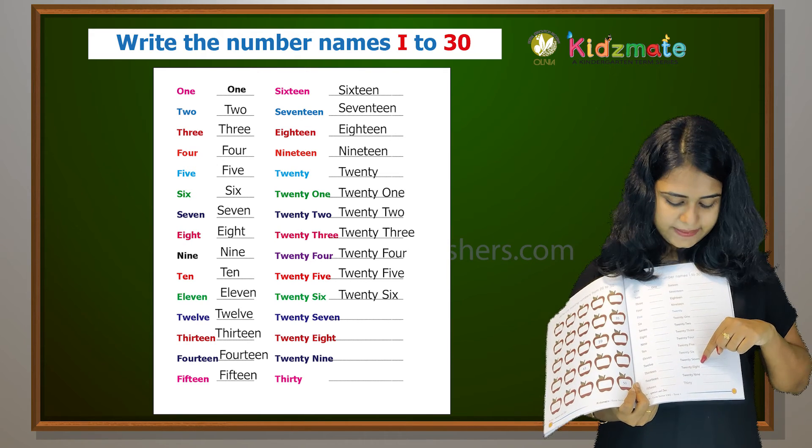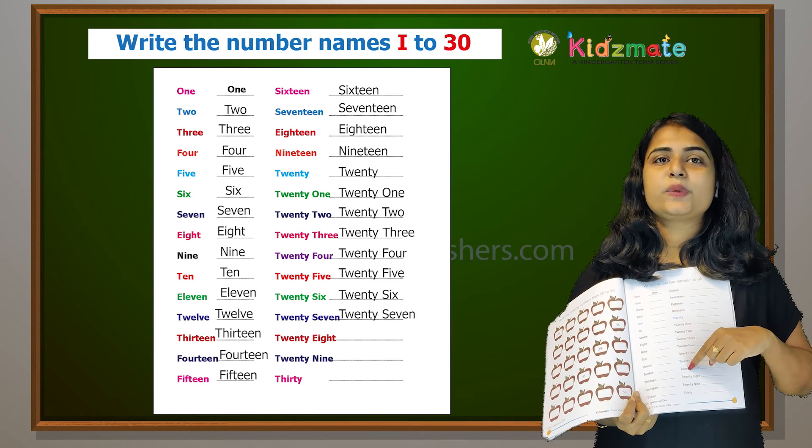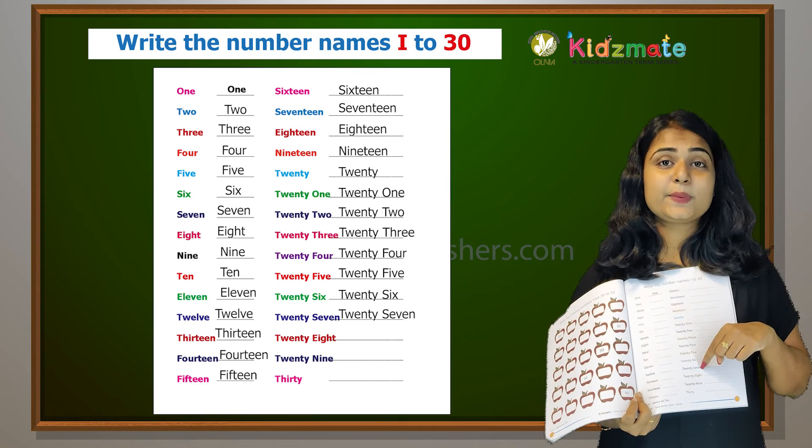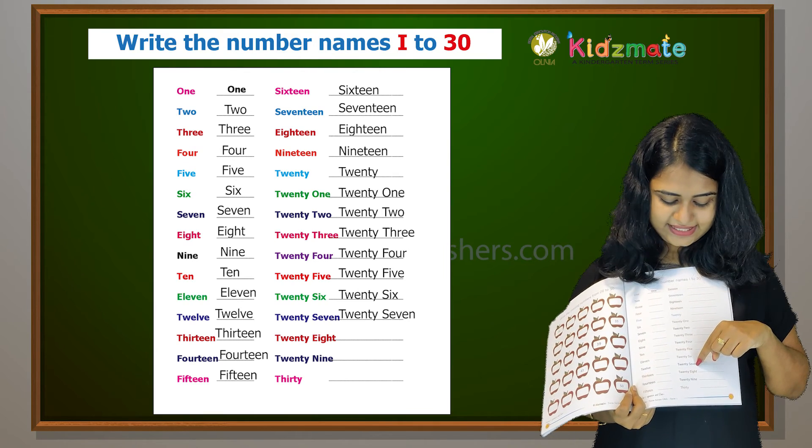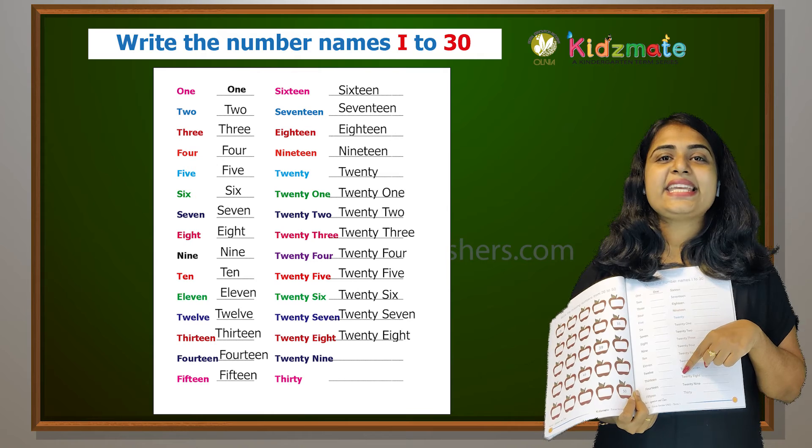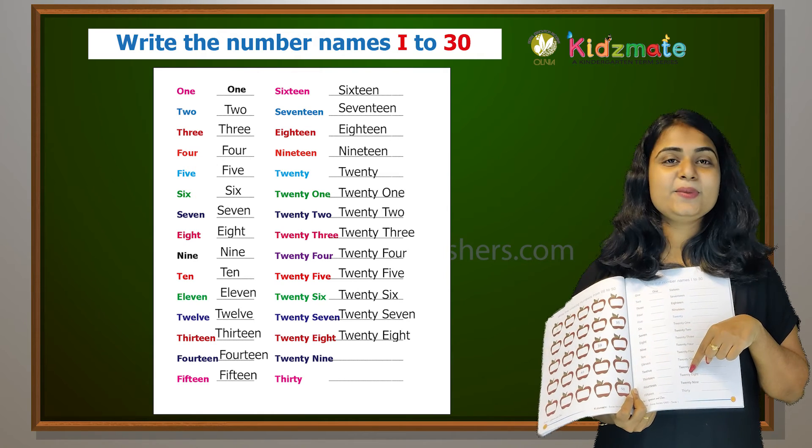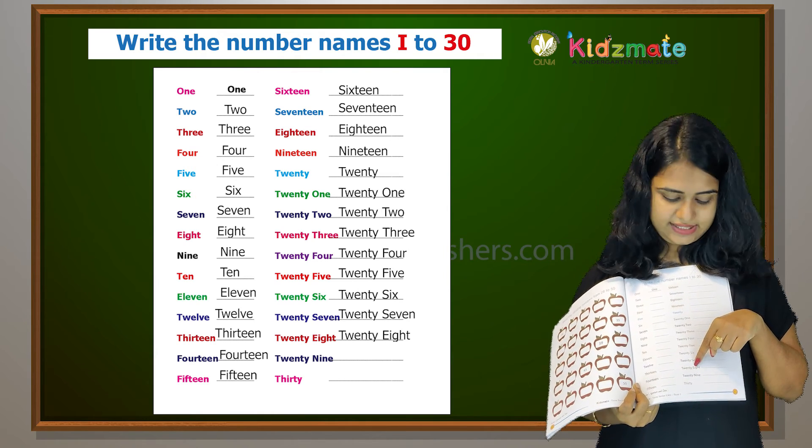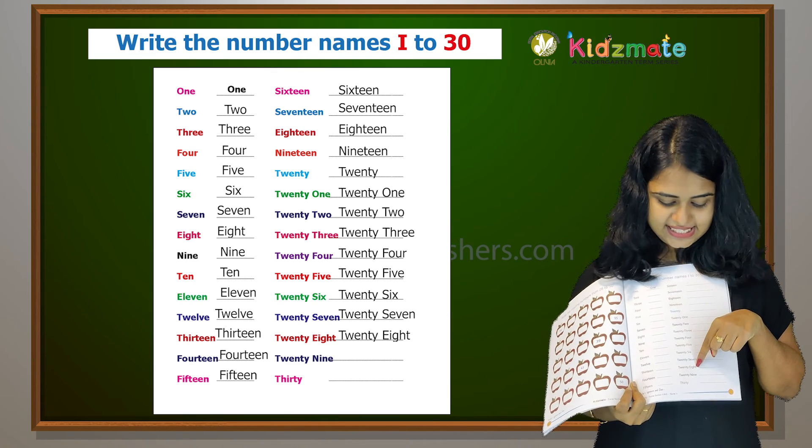Then twenty-seven, the spelling is T-W-E-N-T-Y and S-E-V-E-N, twenty-seven. Twenty-eight, T-W-E-N-T-Y and E-I-G-H-T.